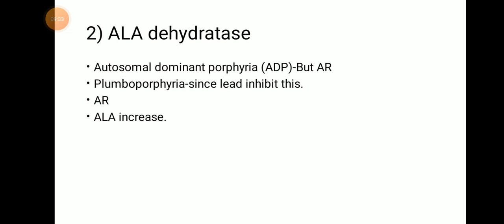The second enzyme is ALA dehydratase. Two ALA molecules react in the presence of ALA dehydratase to form porphobilinogen in the second step. ALA dehydratase deficiency results in ALA dehydratase porphyria — this is a misnomer because it shows autosomal recessive inheritance despite the name. It is also known as plumber porphyria because ALA dehydratase is a zinc-containing enzyme inhibited by lead. The symptoms are due to increase in ALA.